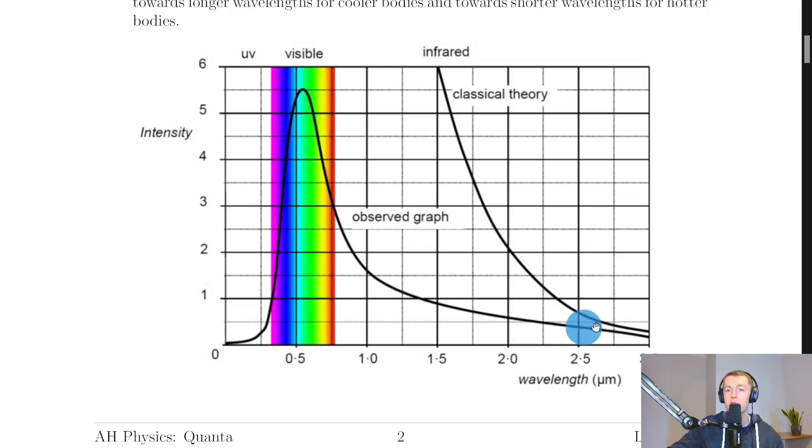Their curve agrees with the observed one for long wavelengths, but towards shorter wavelengths as we decrease along the x-axis, the curve tends towards infinity. This implies that we're going to get maximum intensity for the lowest wavelengths or highest frequencies of radiation.